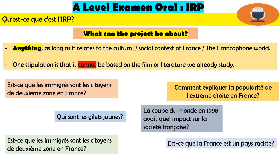Here in the different colour boxes I've put some previous examples that got good marks. We've got 'Est-ce que les immigrés sont les citoyens de deuxième zone en France?' — are immigrants second class citizens in France — a really standout IRP that got a very good grade. 'Qui sont les Gilets Jaunes?' — the protest movement in France. And look at this one: the 1998 World Cup — what impact did it have on French society? You can see how varied they are. You can do your project on anything that interests you, as long as it's not based on the film or the literature.